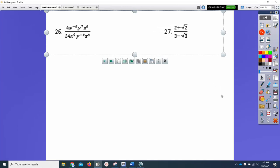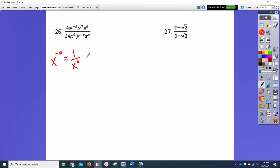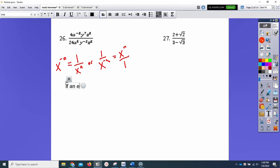One of the first things I'm going to do is apply this rule about x to the negative n being 1 over x to the n, or 1 over x to the negative n being x to the n over 1. Now what this rule is saying in words, which is kind of a big deal: if an exponent is negative, move it, it becomes positive. That's what it's saying.